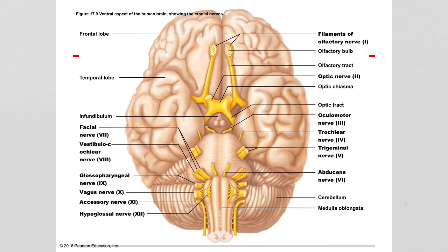The cranial nerves are the nerves that come directly off the brain. You need to know the names of the cranial nerves, their numbers, whether they are motor, sensory, or both, and a general idea of their function. Some of their names give you their function; sometimes you have to tease it out a little more.